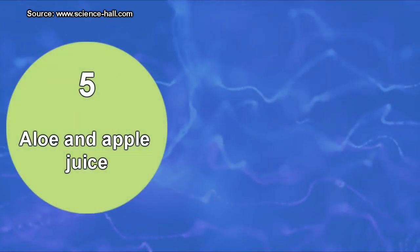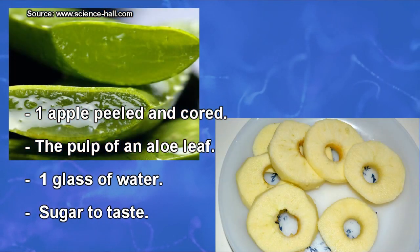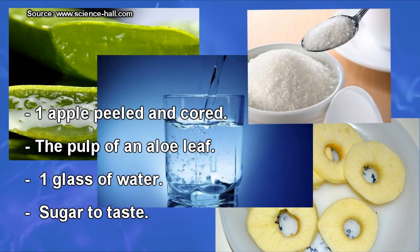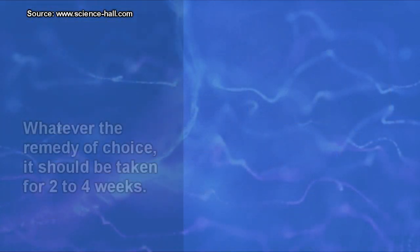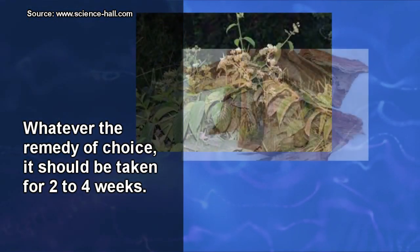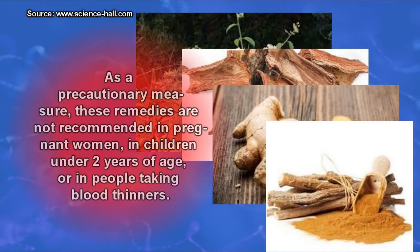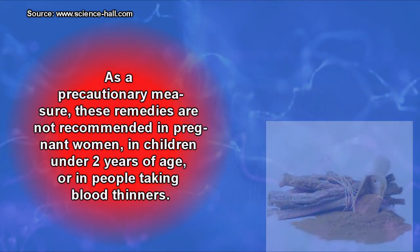Remedy 5: Aloe and apple juice. The required ingredients are 1 apple peeled and cored, the pulp of an aloe leaf, 1 glass of water, and sugar to taste. The ingredients are mixed in the blender. It is recommended to have a glass daily in the morning. Whatever the remedy of choice, it should be taken for 2 to 4 weeks. These remedies are not recommended in pregnant women, children under 2 years of age, or people taking blood thinners.